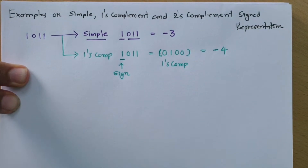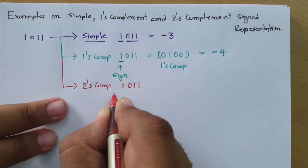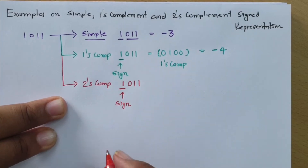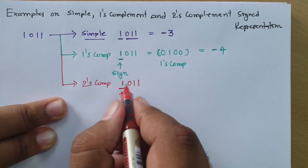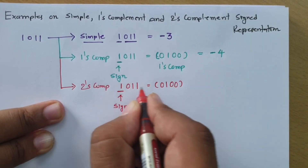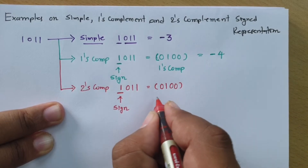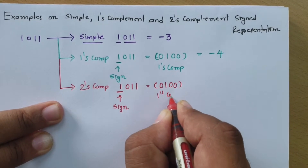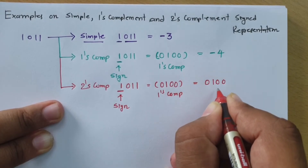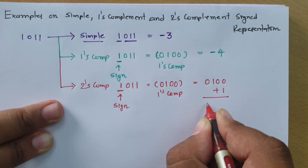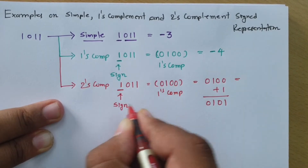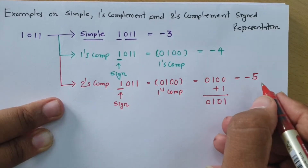Now in two's complement, again we check the first bit, which is one — indicating a negative sign. We need to do the two's complement of this number. First, one's complement gives 0100. Then we add one to get the two's complement: 0101, which is 5. Since the sign is negative, the answer in two's complement sign representation is minus 5.